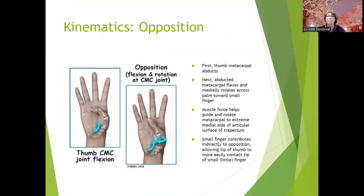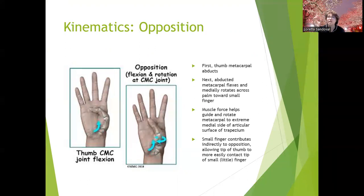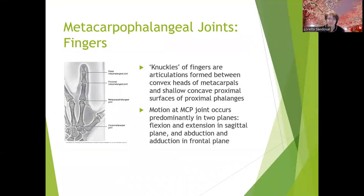In opposition, the first thumb metacarpal abducts, then the abducted metacarpal flexes and immediately rotates across the palm towards the small finger — it's a combination of flexion and abduction. Muscle force helps guide and rotate the metacarpal to the extreme medial side of the articular surface of the trapezium. The small finger contributes indirectly by curling so the thumb can more easily contact it. Opposition is one of the exercises used to regain hand function after injury, and it's also helpful for arthritis in warm water.